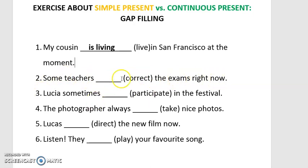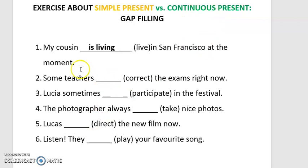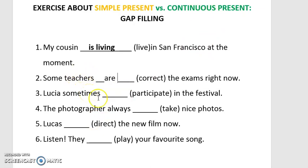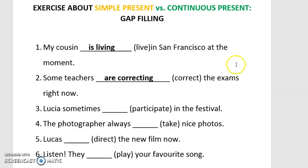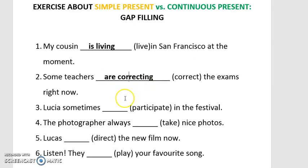Number two: 'Some teachers __ the exams right now' — 'Algunos profesores corregir los exámenes ahora mismo.' The expression 'right now' tells us the answer is in the continuous present. 'Some teachers' is plural, so we write 'are,' and the verb with '-ing': 'are correcting.' That is the answer.